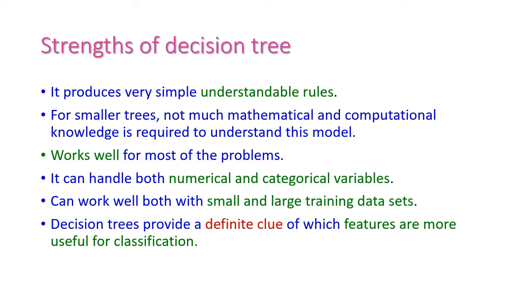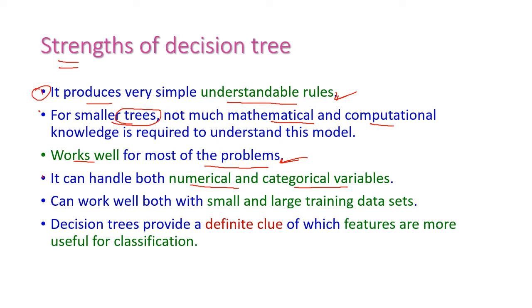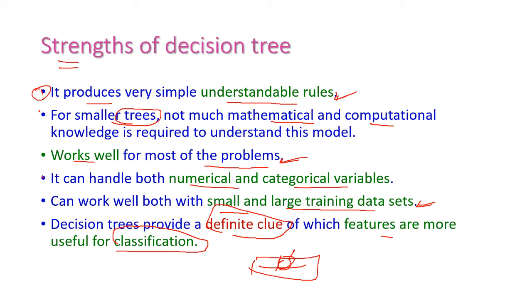The strengths of decision tree include: it provides very simple and understandable rules; for smaller trees there is no requirement of mathematical or computational knowledge; it works well for almost all machine learning problems; it can handle both numerical and categorical data; it is suitable for small or large training datasets; and it provides definite clues about which features are most useful for classification.